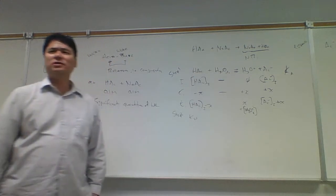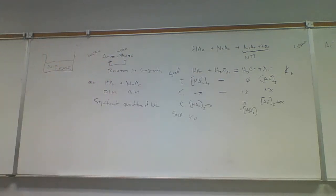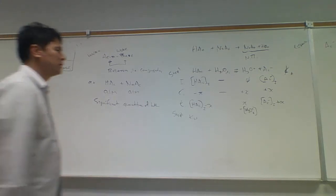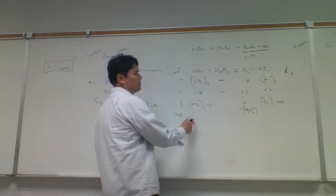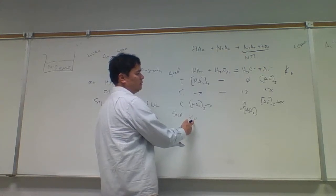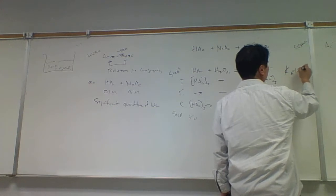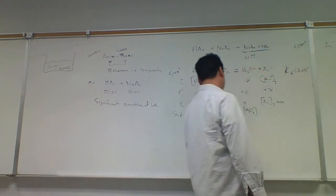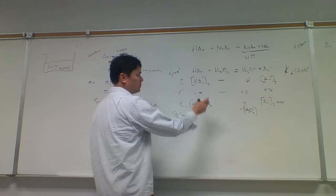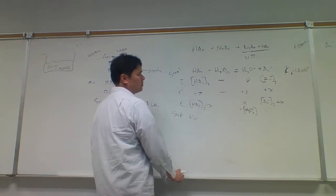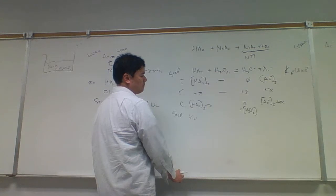The hydronium from step two is going to be from water, KW. Do we expect much additional hydronium from water auto-ionization? No. KW is 10⁻¹⁴, while Ka is 1.8 × 10⁻⁵. KW is so small that we would expect most of the hydronium to be generated in step one.